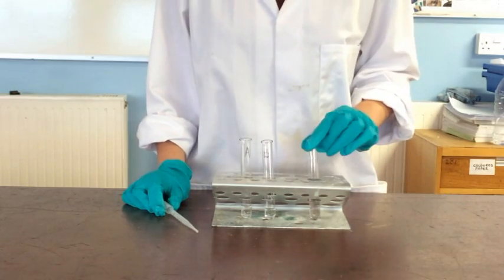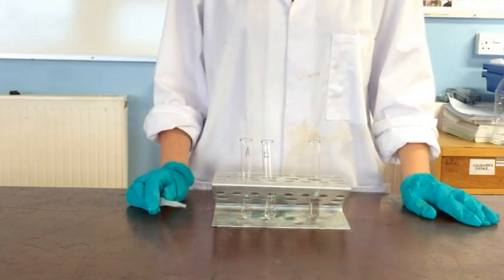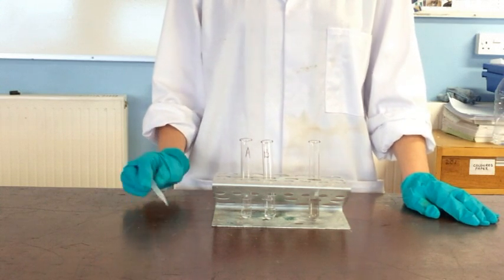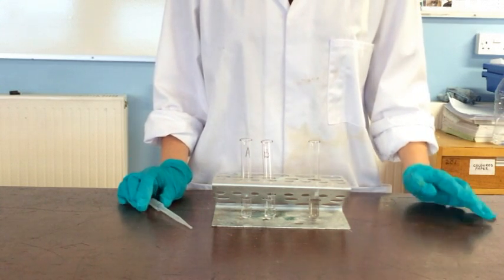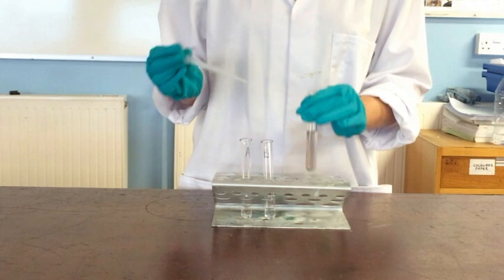Now we're going to add our Tollens' reagent to A and B and what we're looking for is if it's an aldehyde, we're going to see a silver mirror effect.